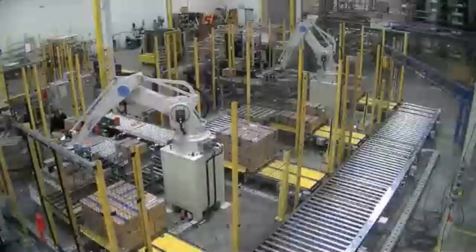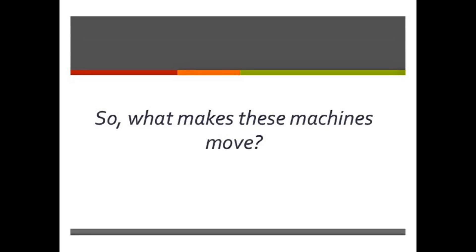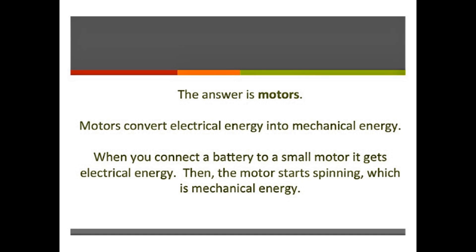Even these motions require complex calculations. When these motions are combined, more detailed movements can be performed. So what makes these machines move? The answer is motors. Motors convert electrical energy into mechanical energy. When you connect a battery to a small motor, it gets electrical energy, then the motor starts spinning, which is mechanical energy.